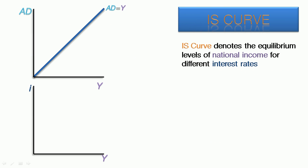Now we can move on to the IS curve, which denotes the equilibrium levels of national income for different interest rates. Just as we did in the previous slide, we will be graphing the aggregate demand curve for different interest rates in the top graph. The bottom graph also has income on its x-axis, and will show the different interest rates.